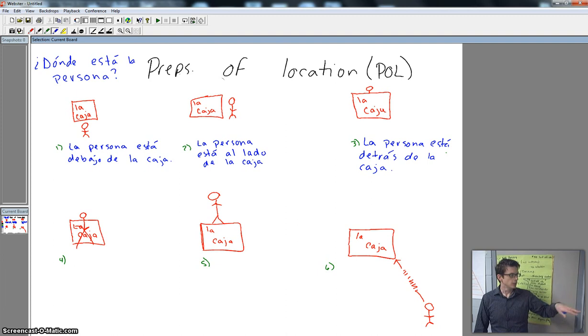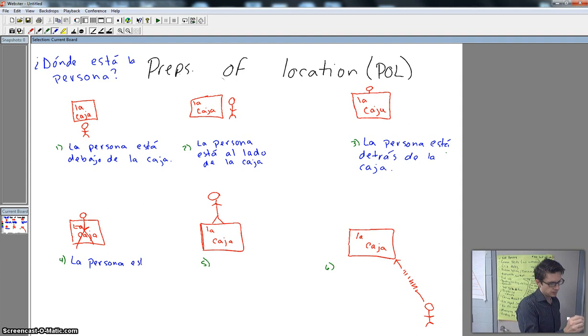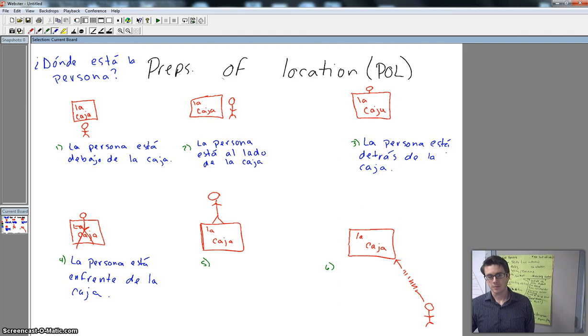Número cuatro. You can see the person. He's kind of blocking the box that is in the background. So what do you think? ¿Dónde está la persona? Think about it. Pause it if you have to think. La persona está enfrente de la caja. Now there could have been a couple answers here. La persona está enfrente de... That one works. La persona está delante de... That one works. So could have been in any one of those.